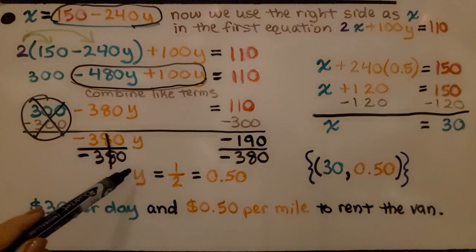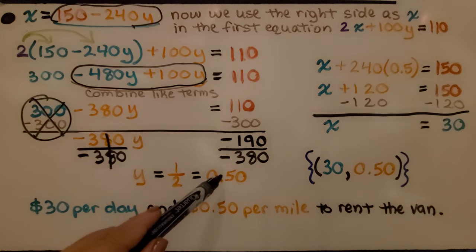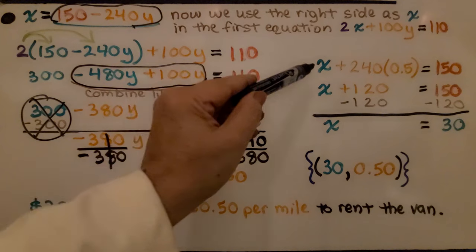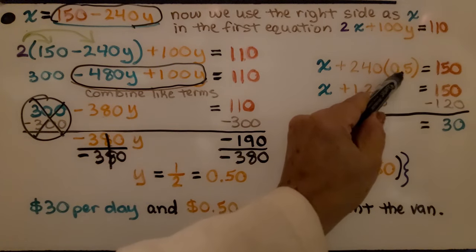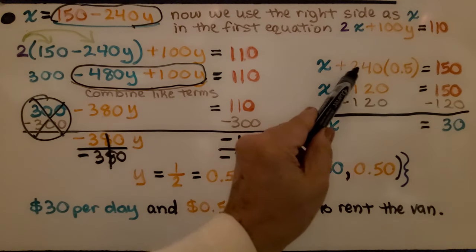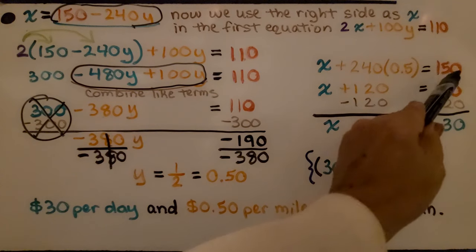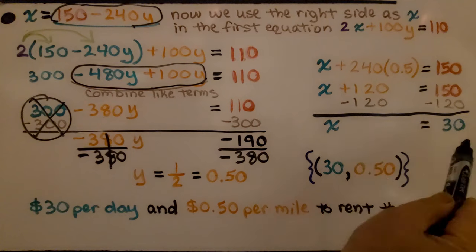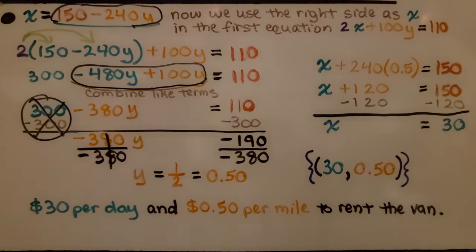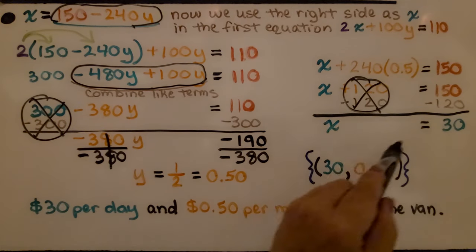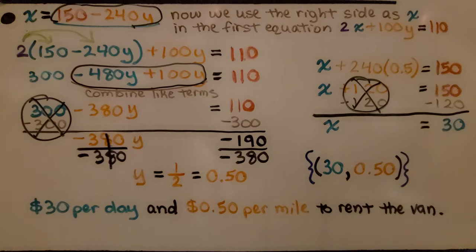Now, we have the value for y is 50 cents because we're dealing with money. We know the value of y is 50 cents. So, into our equation, our second equation, we put this 0.5 for y and we solve for x. We have x plus 240 times 0.5 equals 150. And we can subtract this 120 from each side. That's going to eliminate it, make a zero pair, and we're left with x equals 30.